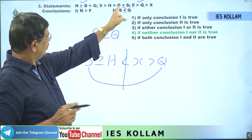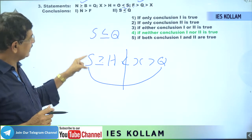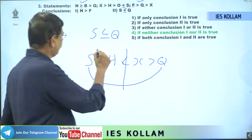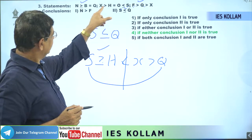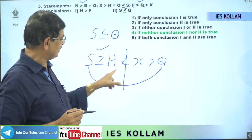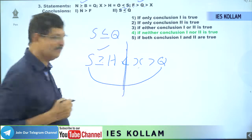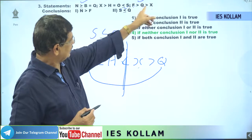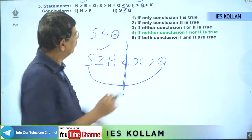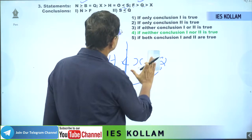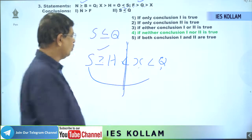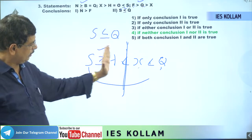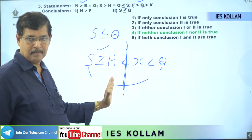Starting from s: o less than or equal to s, when we inverse it, gives s greater than or equal to o — and instead of o we are taking h, so h and o are equal, giving s greater than or equal to h. Then h connects with x: h less than x. But the connection is breaking here — it is not connecting. Then q and x have a connection: q greater than x means x less than q. The first symbol is greater than or equal to, but the second term is in the opposite direction, therefore it is breaking. You cannot go to the other term.